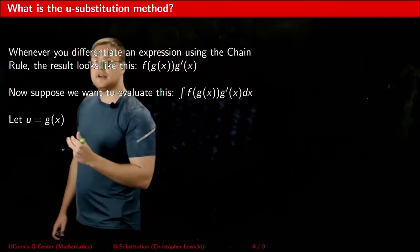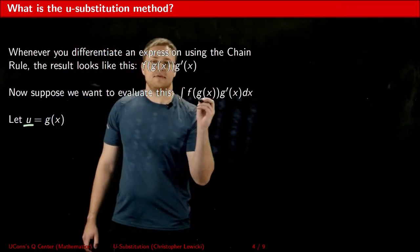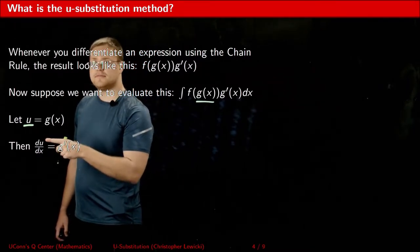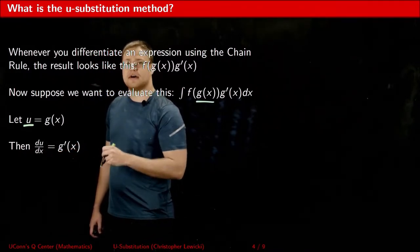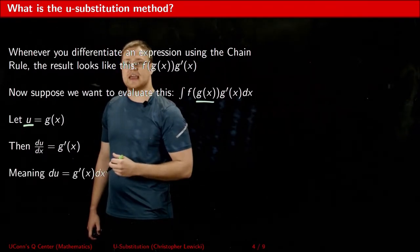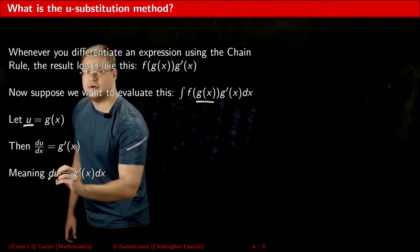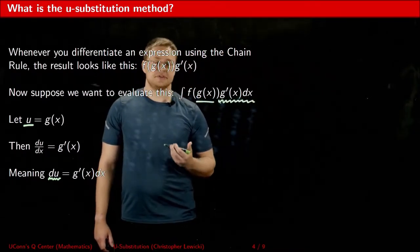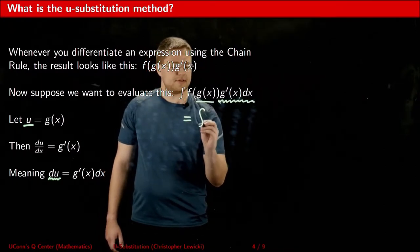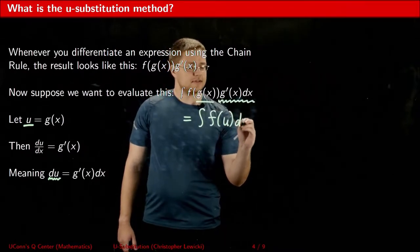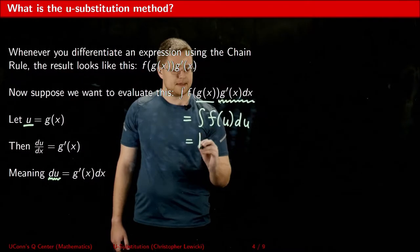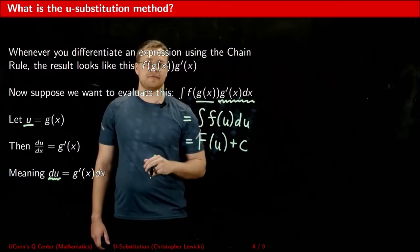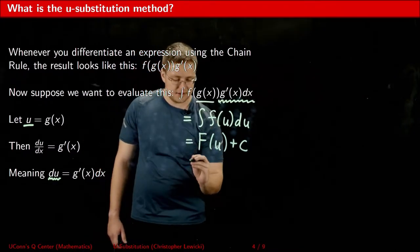Here's what this is going to look like. I'm going to set u equal to the inside part of my outside-inside function, g of x. Notice that if I took the derivative of u with respect to x, it's equal to g prime of x. I could now multiply both sides of this equation by dx, which gives me du equals g prime of x dx. Notice that du is equal to this part of the expression. I'm now going to do my change in variables.